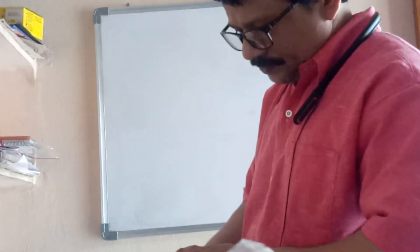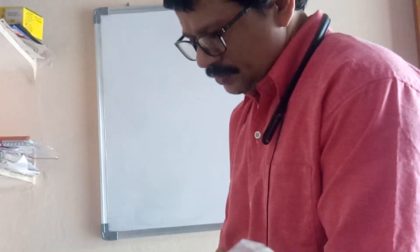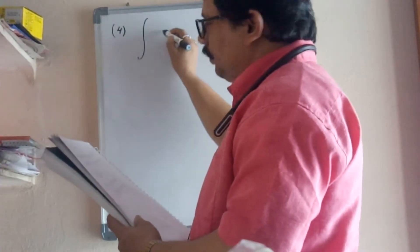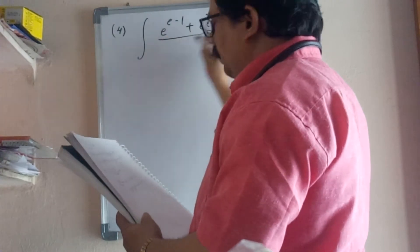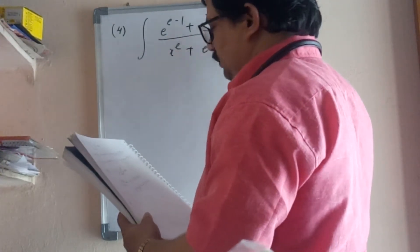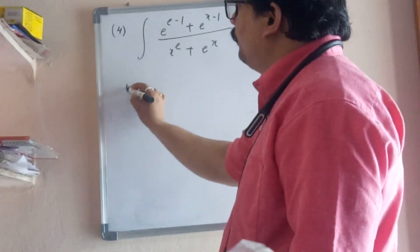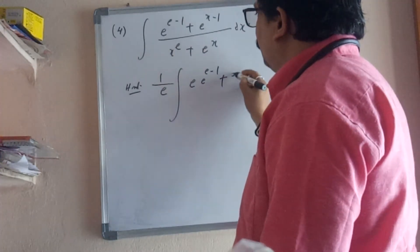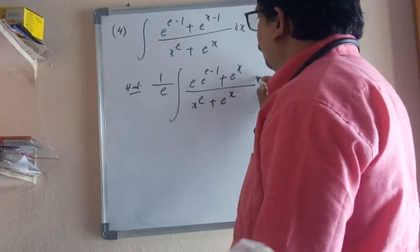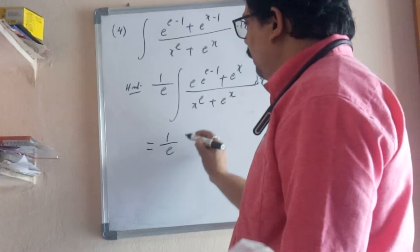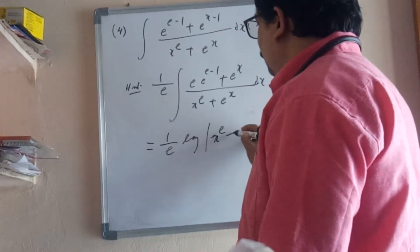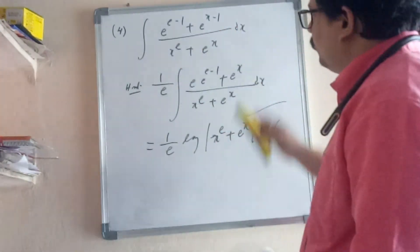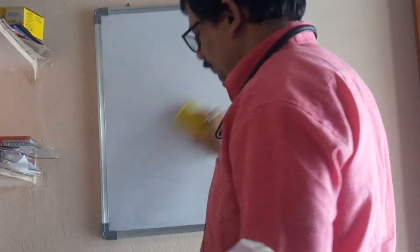The fourth one, the important one: integral of (e^x - 1)/x dx. Simple logic I will tell you, listen carefully. 1/e integral of (e^(e^x-1) + e^x)/x dx. You know 1/e times log|x|^e + e^x + C. This is the answer.